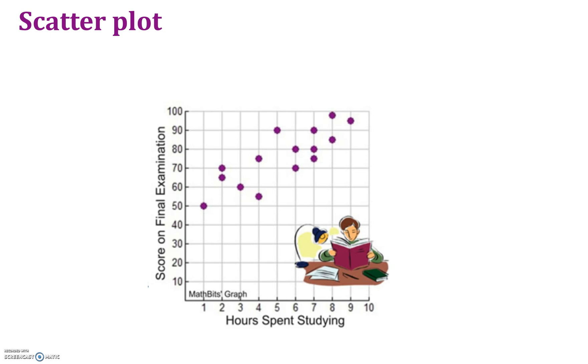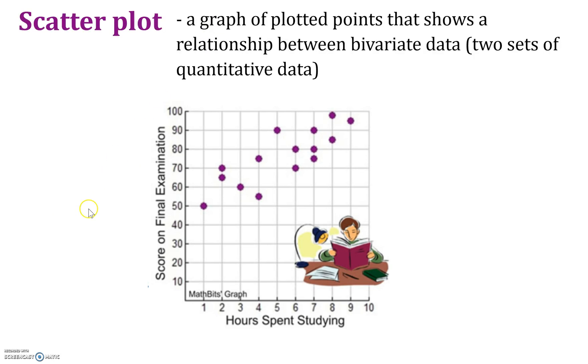To start off, we're looking at a scatter plot, which is just a graph of plotted points that shows a relationship between two sets of data. You should notice that in this scatter plot, we're comparing scores on their final exam and hours spent studying to see if we see any type of relationship between the two. You should notice that this graph is composed of dots or different points, but they are not connected. With a scatter plot, we do not connect the points.